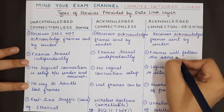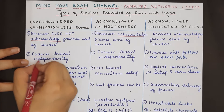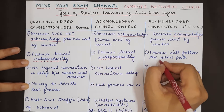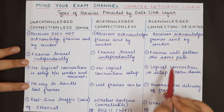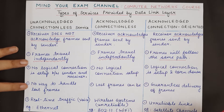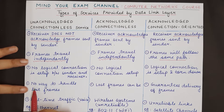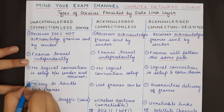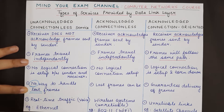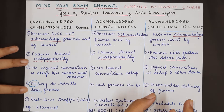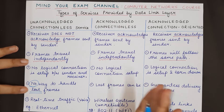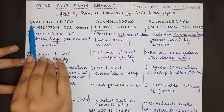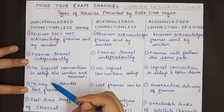When frames travel independently there is no restriction on the path followed, but when a connection has been set up all frames follow that particular connection. An important difference is that in unacknowledged connectionless service there is no way to handle lost frames — if a frame is lost due to a noisy channel and never reaches the receiver, the receiver has no way to report this, so the lost frame is lost forever.